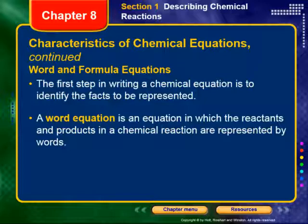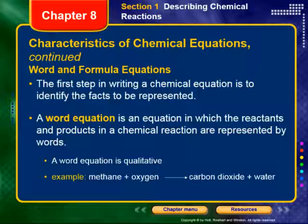The first step in writing a chemical equation is to identify the facts to be represented. An easy way to do that is to work out a word equation — an equation in which the reactants and products are represented by words. A word equation is easier to start with because it's qualitative: it describes the identities of the chemicals involved. For example, methane and oxygen react to yield carbon dioxide and water. This doesn't say how much of each chemical is required — it's qualitative, not quantitative.